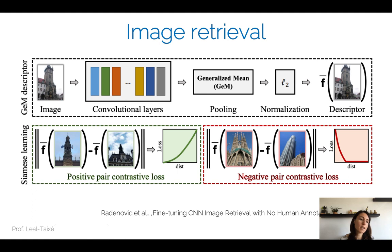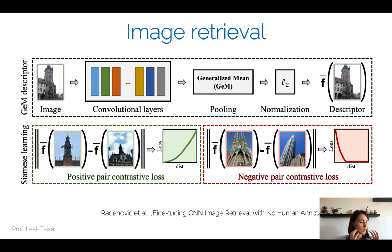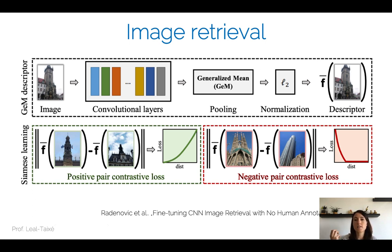For image retrieval, given a picture of a famous building, we want to identify it by comparing against a database. Similarity learning brings all pictures of the same building close together and separates images of different buildings. One work uses the contrastive loss to create a building descriptor so that at test time, nearest neighbor search directly determines which famous building is depicted.